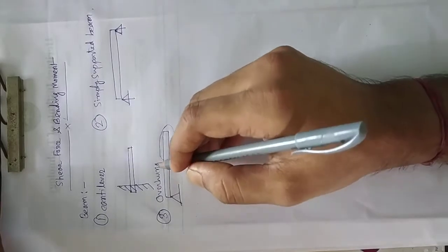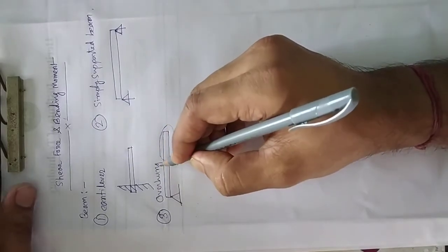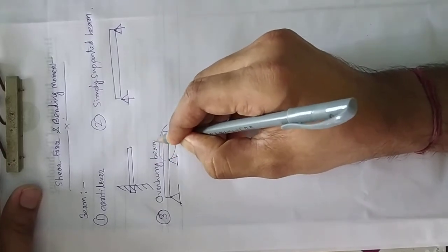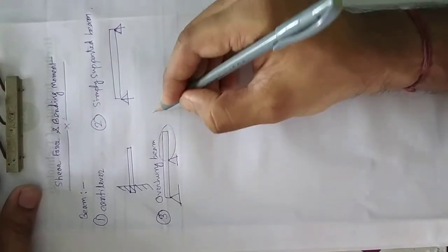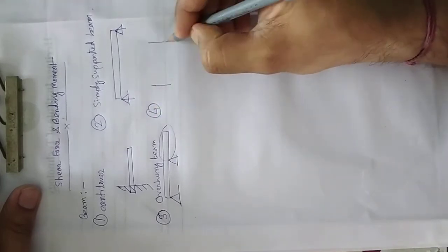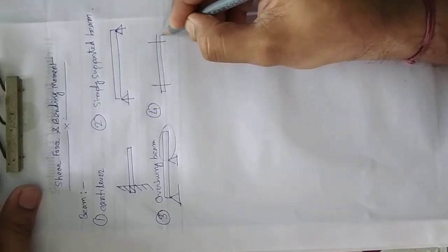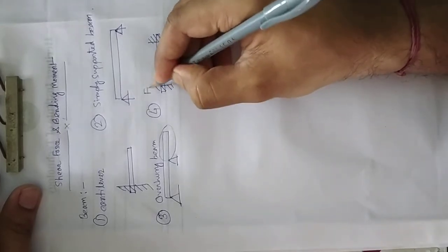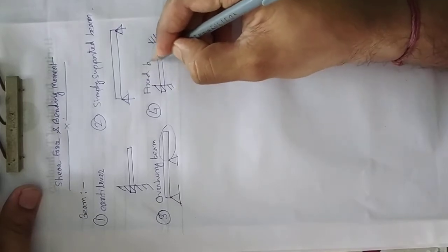Number four is fixed beam, which has both ends fixed. This is called fixed beam.